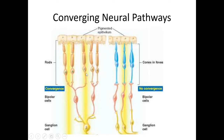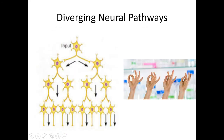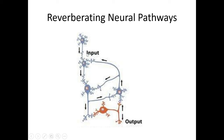Light reception goes through a converging pathway in the rods, but not in the cones in the fovea. In a diverging neural pathway, there is a single point from which several neurons are attached. This allows signals to reach more than one destination at the same time. It is diverging neural pathways which allow for fine motor control of the fingers and intricate hand movements.